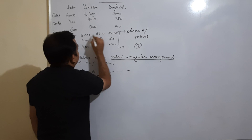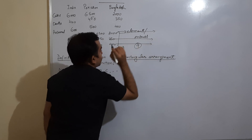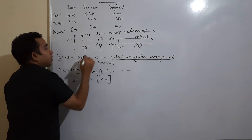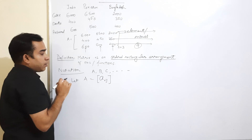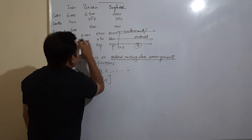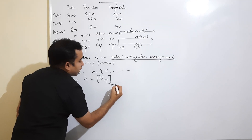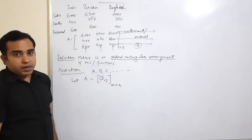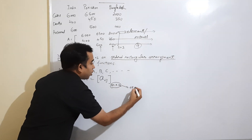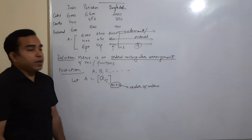The horizontal lines are called rows. So here we have one row, another row, and a third row. The vertical ones are called columns — here there are three columns and three rows. The index i represents the row number and j represents the column number. If the number of rows is m and the number of columns is n, then we write m×n — this is called the order of the matrix.